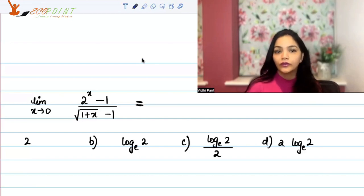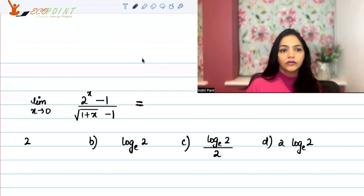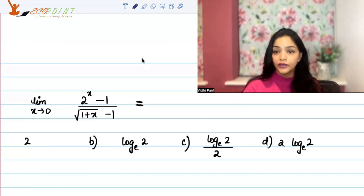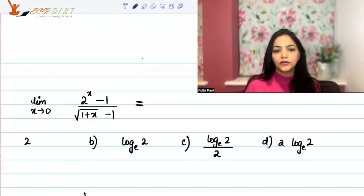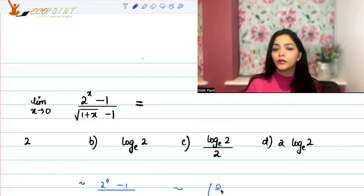The first question: limit x goes to 0 of the expression (2 to the power x minus 1) upon (square root of 1 plus x minus 1). So first, you need to see what form you are getting in terms of limits. Directly substitute 0: you get 2 to the power 0 minus 1 upon square root of 1 plus 0 minus 1, which gives you a 0 by 0 scenario.